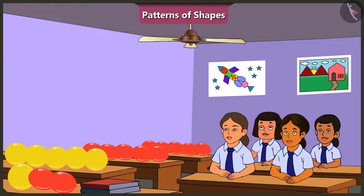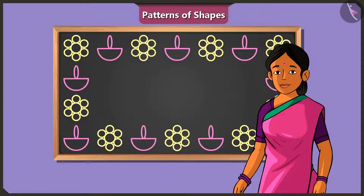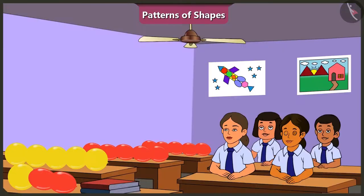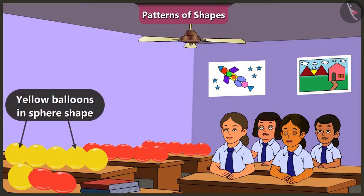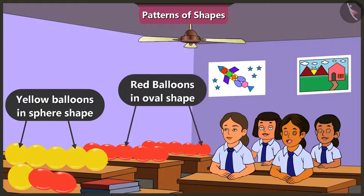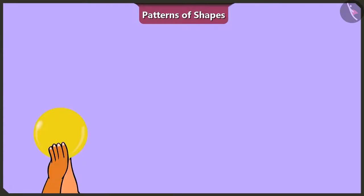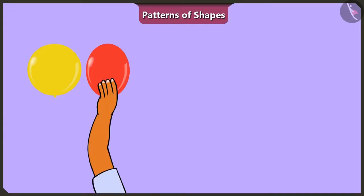Ma'am, can we decorate the wall with balloons? Absolutely. Decorate it. Come on, Binny. Let us decorate this wall with balloons in sphere shape and oval shape. Yes. Here are some yellow balloons in the sphere shape and red balloons in the oval shape. Binny, let's create a special pattern out of these. Yes. Let's put one yellow spherical balloon and one red oval balloon like this.